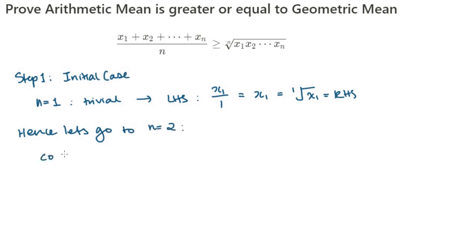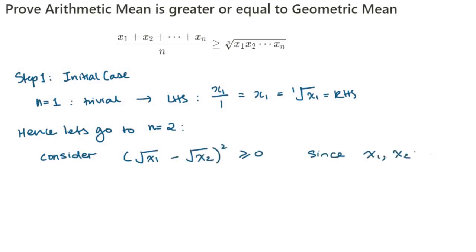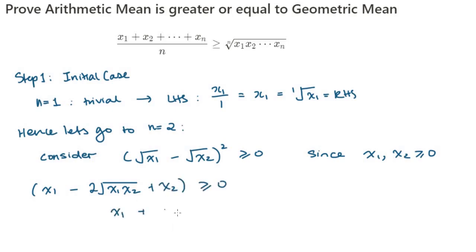So let's look at n equals 2, when there are two terms. Consider that the square of (√x₁ − √x₂) must be greater than or equal to 0, and x₁ and x₂ are both non-negative. Expanding the left-hand side,